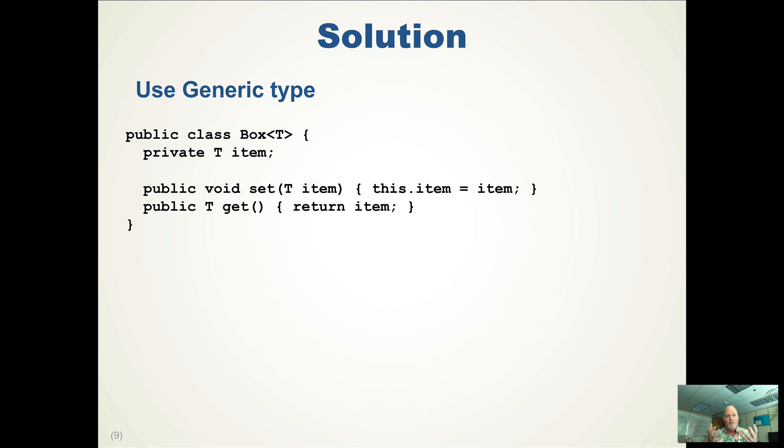So notice we have our class Box. We have this bracket, a capital letter, and a closed bracket, or less than and greater than. That's how we indicate that it's a generic.